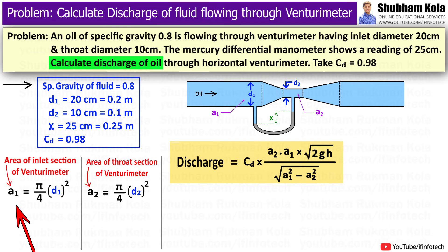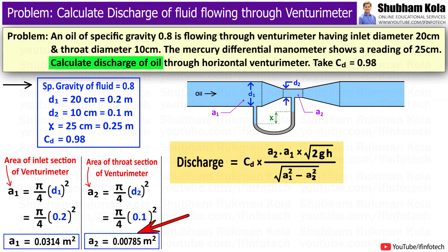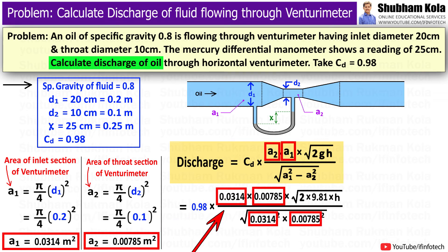A1 will be pi by 4 d1 square, which is 0.2 square, giving A1 as 0.0314 m square. Similarly, A2 is 0.00785 m square. I will put these values in the discharge formula.